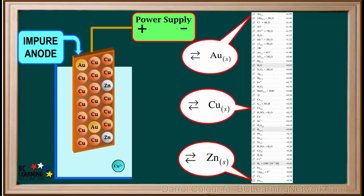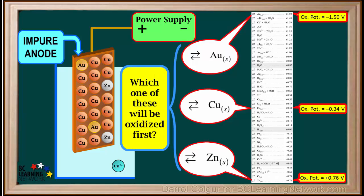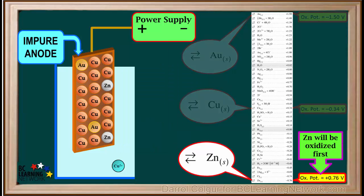Now, if we consider gold, copper, and zinc, we see that gold has an oxidation potential of negative 1.5 volts. Copper has an oxidation potential of negative 0.34 volts, and zinc has an oxidation potential of positive 0.76 volts. The question now is, which one of these metals will be oxidized first? The answer is, zinc will be oxidized first. It has the highest oxidation potential of all three, and is lowest on the right.